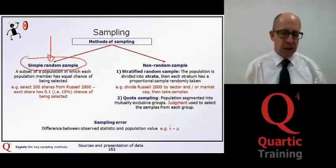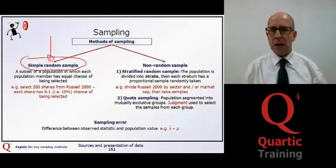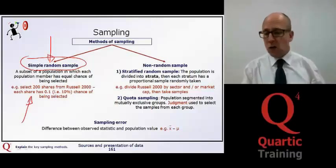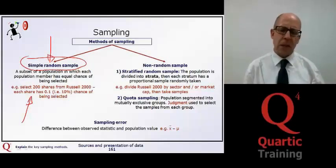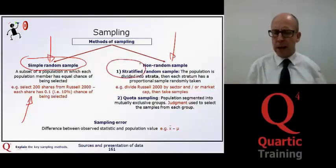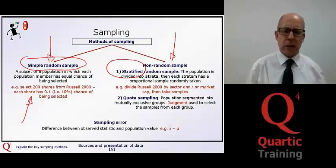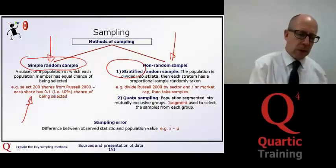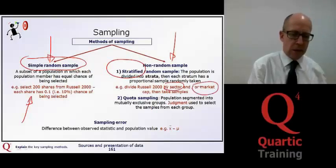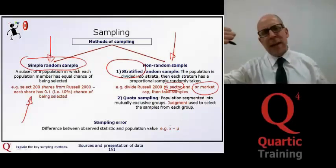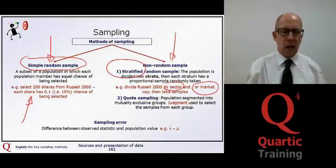We may get some bias in our sampling there, because we might just happen to pick all of the shares. If we're picking shares out of the Russell 2000 index, we might, in fact, pick 150 shares that are in the financial services sector. So a non-random sample, a valid way of taking that, would be what's called a stratified random sample, where we divide the population into different strata, or classifications, and then take a random sample from each of those strata. We take a different strata here, either by the size of the company, the market cap, or the sector, and then take samples within there. So we ensure that we get a more even spread across different industry sectors, for example.